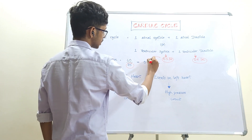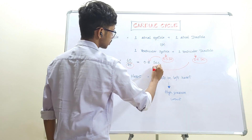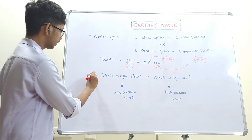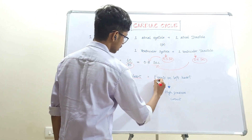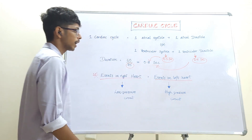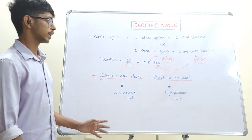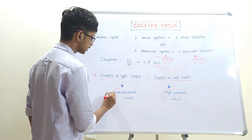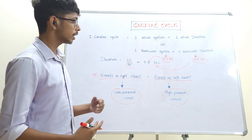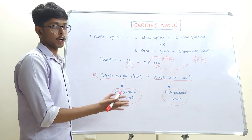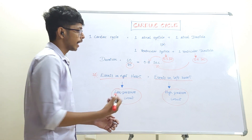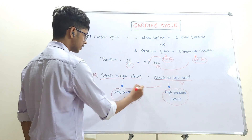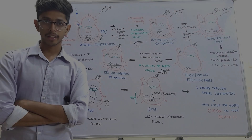Out of 0.8 seconds, 0.3 seconds is the systolic phase and 0.5 seconds is the diastolic phase. Events occurring in the left heart are the same as those in the right heart. I will be depicting only the events in the left heart because the left heart is a high pressure circuit, where pressure changes are more evident, whereas the right heart is a low pressure circuit.